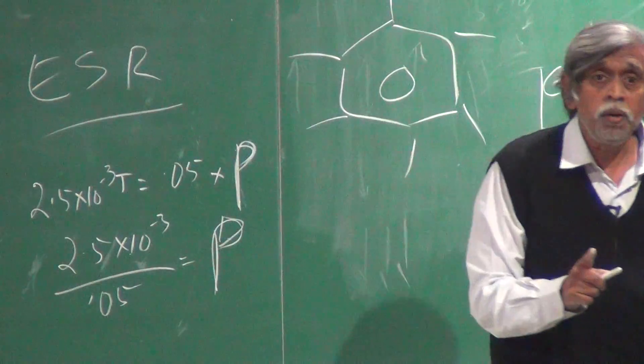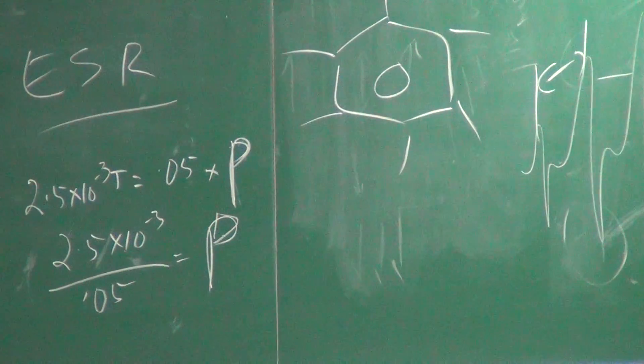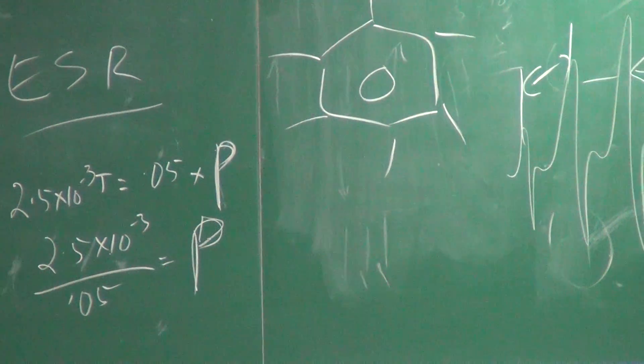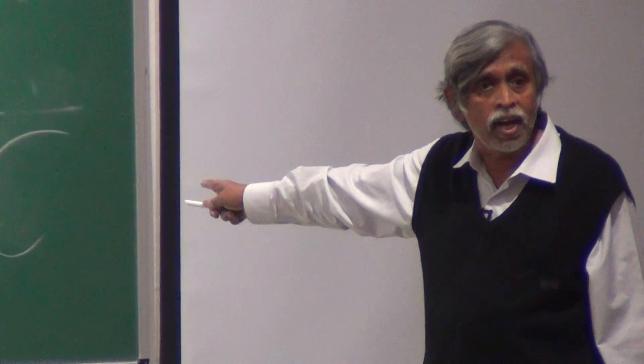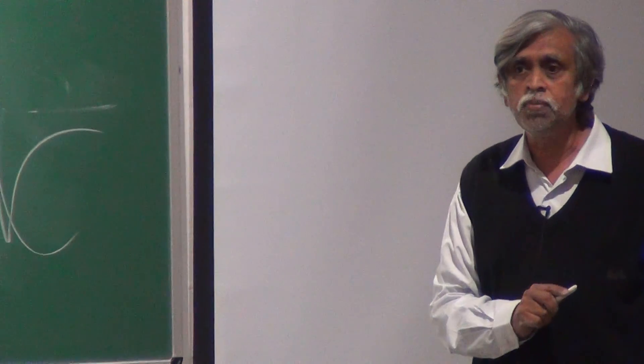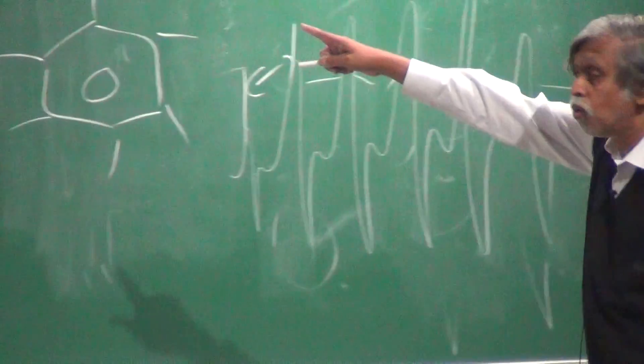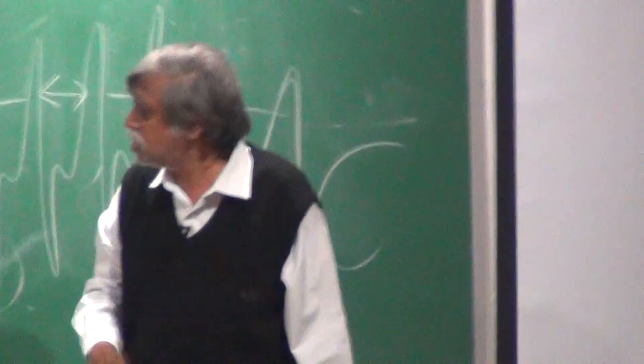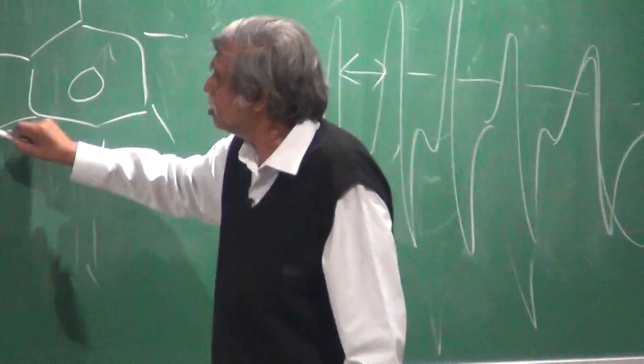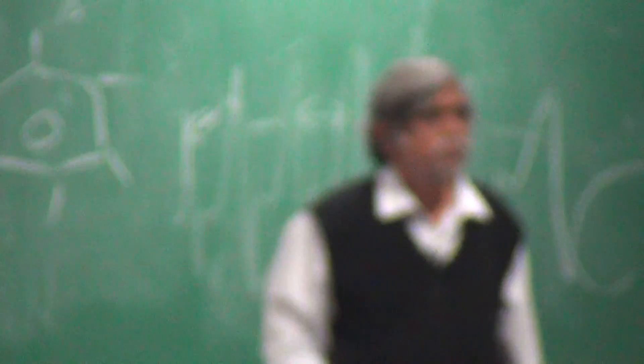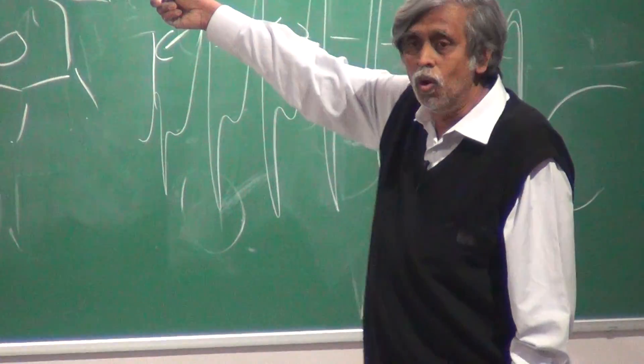And what is this rho going to be? It is going to be the electron density on the nucleus, which is causing the splitting in the first place. Who is causing the splitting in the case of the phenyl radical? The proton is causing the splitting. Therefore, that rho that you get will actually be the electron density on this hydrogen.